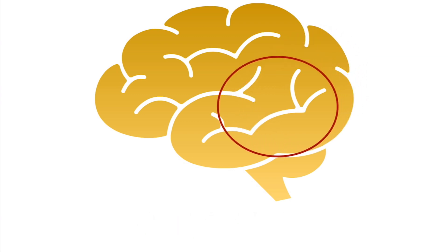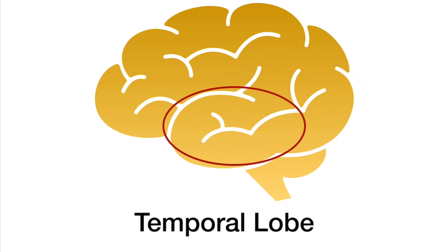Over to the side of the brain is the temporal lobe. This area is primarily for auditory processing — things like speech, listening to verbal language, and sounds — as well as auditory memory.